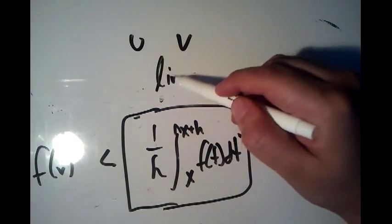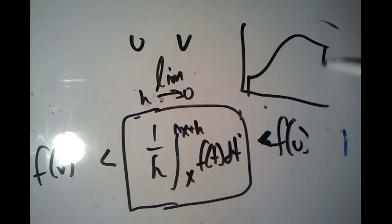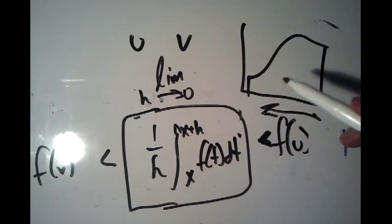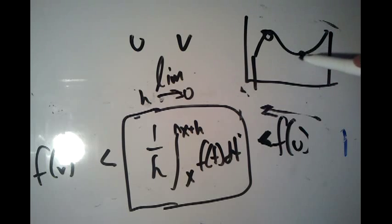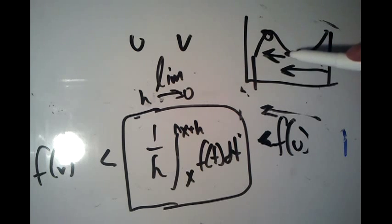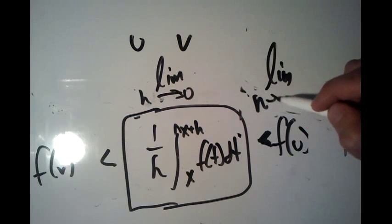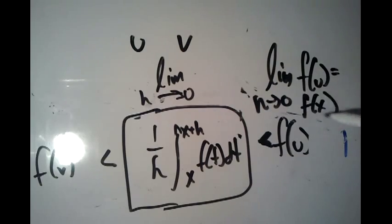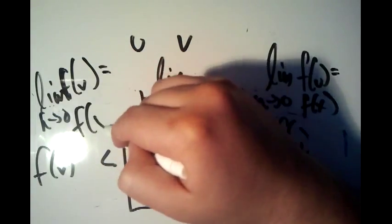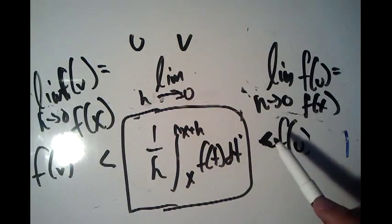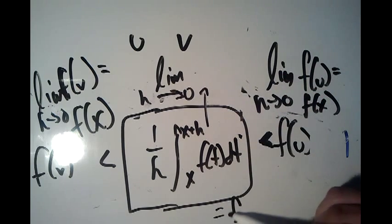Now we take the limit as h approaches zero. On the graph, x plus h is getting closer to x. As that happens, the points u and v, which were somewhere between x and x plus h, are also forced closer to x. So f of u and f of v are both going closer to f of x. The limit as h approaches zero of f of u equals f of x, and the limit as h approaches zero of f of v equals f of x. By the sandwich theorem, since our quantity is squeezed between two expressions both going to f of x, it must also equal f of x.